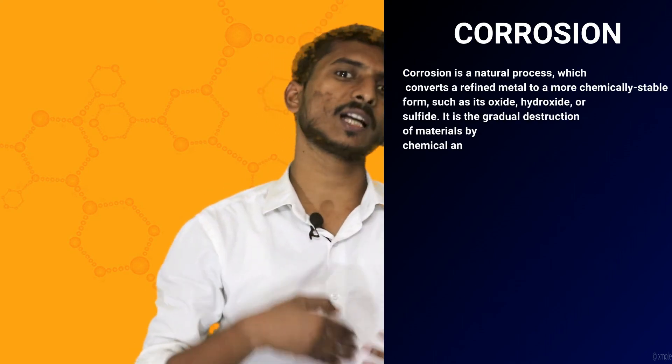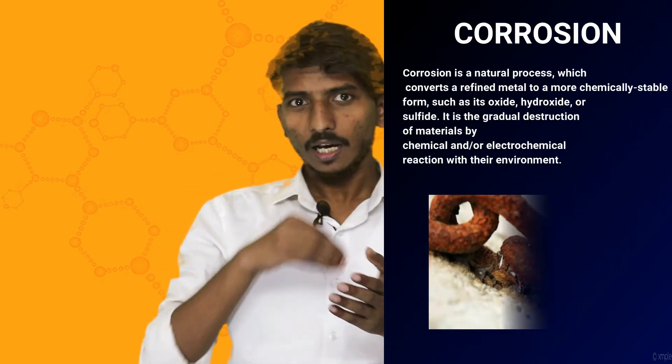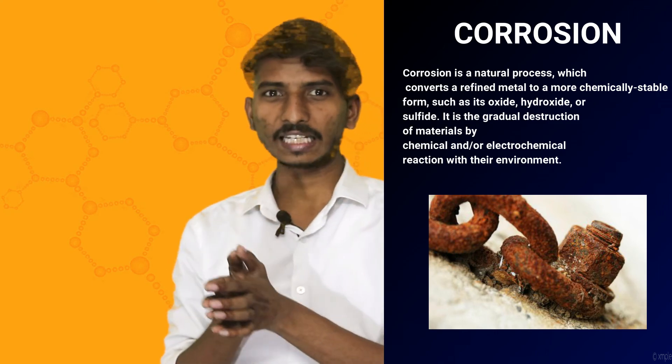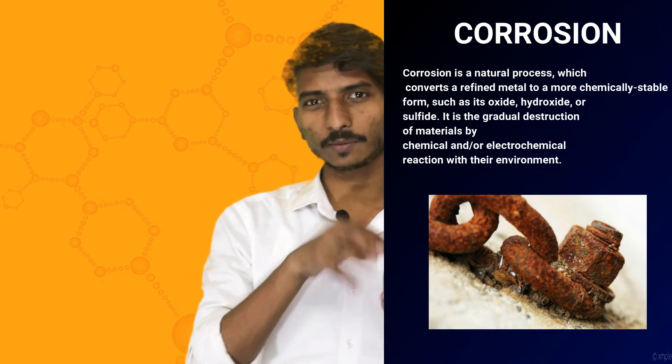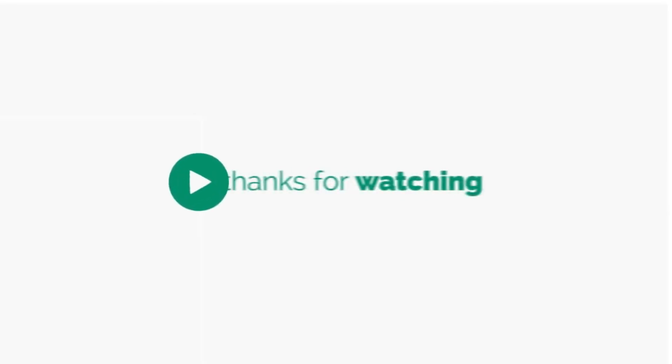Corrosion means when a metal comes in contact with oxygen or moisture and reacts, it loses its properties — this is called corrosion. For example, when iron comes in contact with moisture, it forms ferric oxide and starts to rust. This is what we commonly call rusting. Any metal can oxidize when it comes in contact with oxygen. To prevent this, we generally paint the metal or apply another coating so that it does not come in contact with moisture or air.